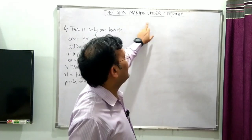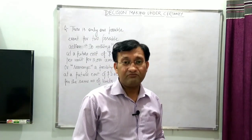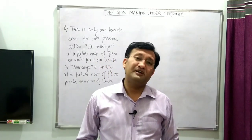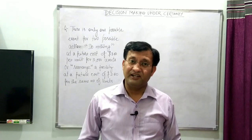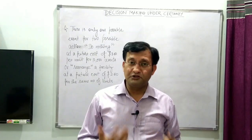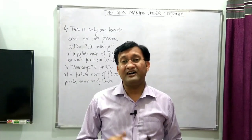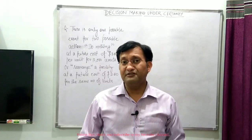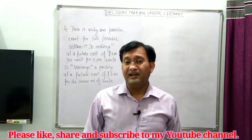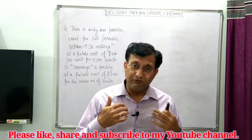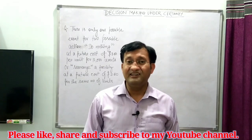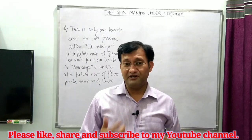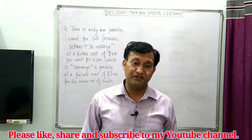Now let's talk about decision-making under certainty. Under this kind of decision-making we have three fundamental concepts. One is action, meaning we are going to take a certain action. Then there are certain conditions, meaning we need to abide by the conditions which are there. And last is outcome — whenever we take a decision there shall be an outcome.